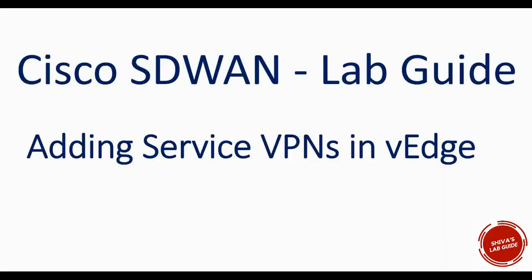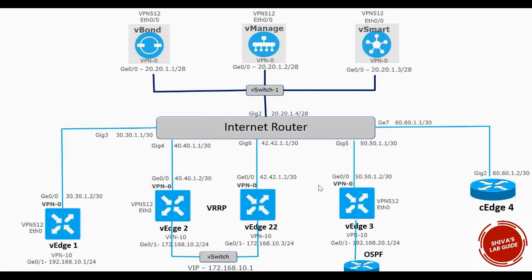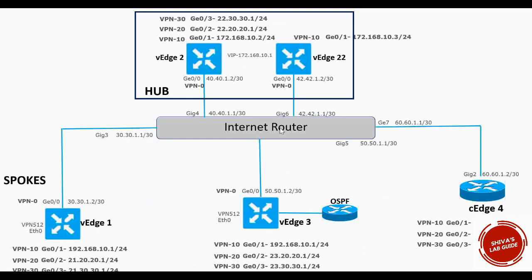In this video I'm going to show you how to add new service VPNs in your existing SD-WAN setup. This is our existing topology - I removed the controllers and kept VH2 and VH22 at the top so we can easily understand how the hub and spoke routers are segregated. VH2 and VH22 continue to be our hub routers, and VH1, VH3, and VH4 will be our spoke routers.